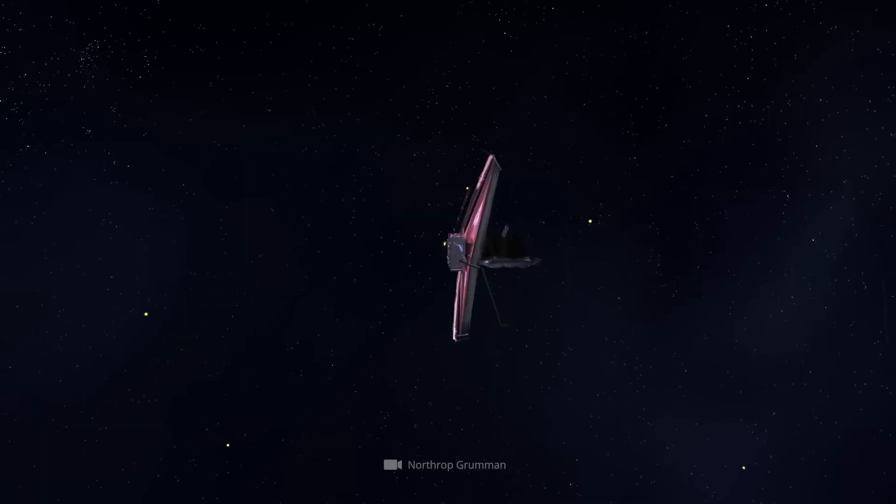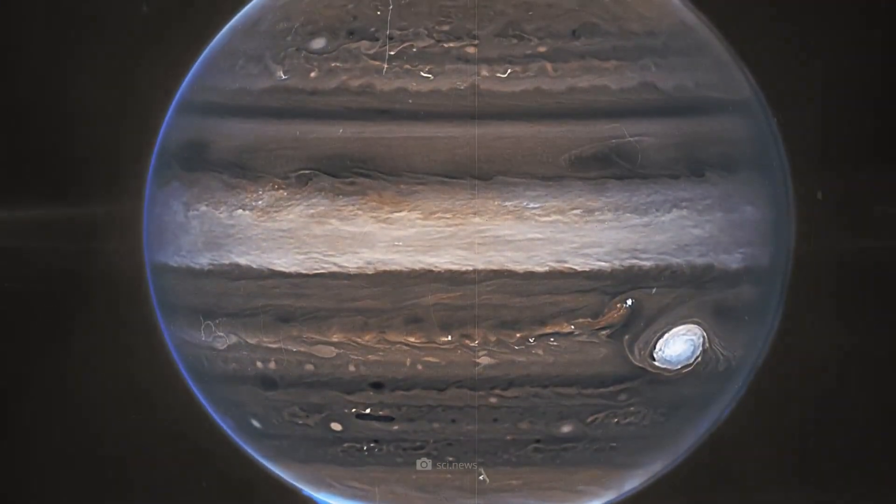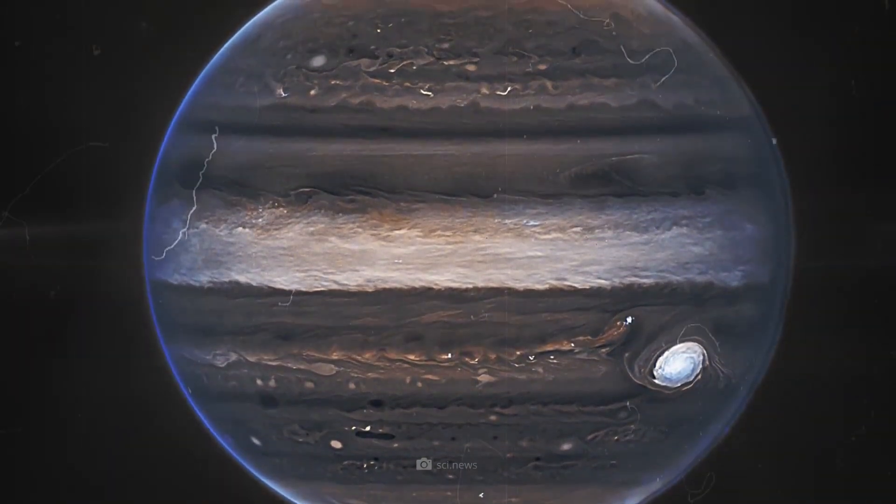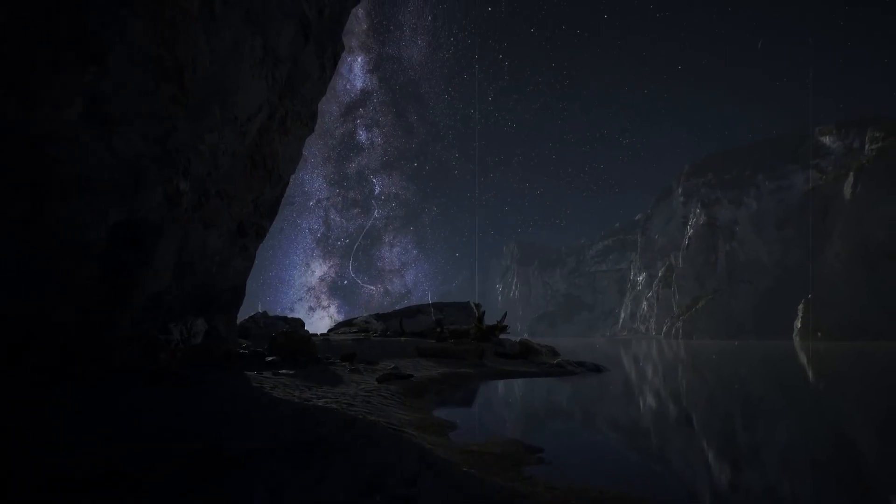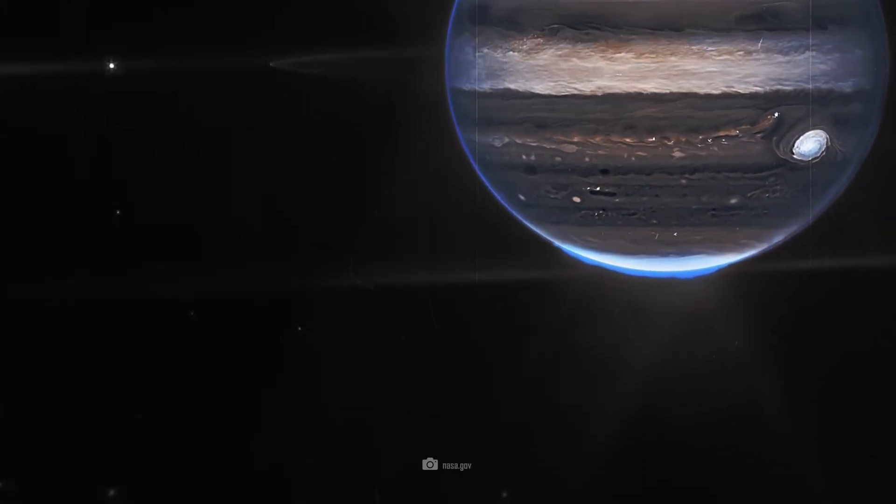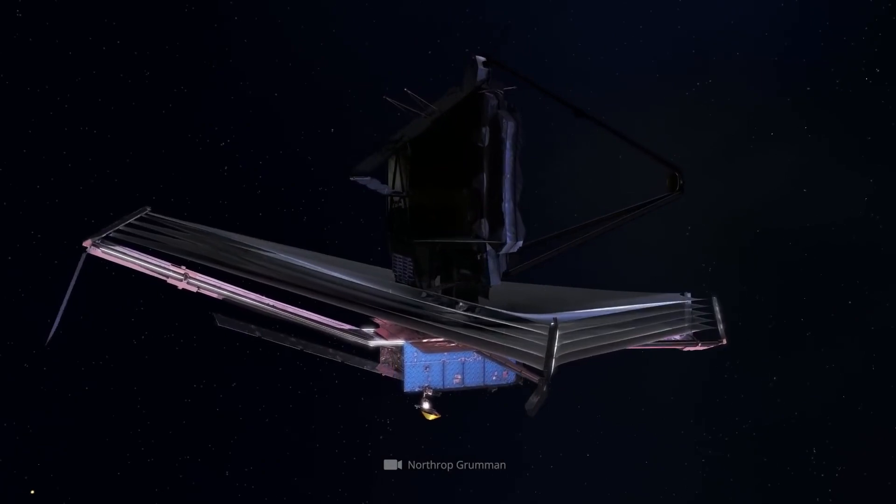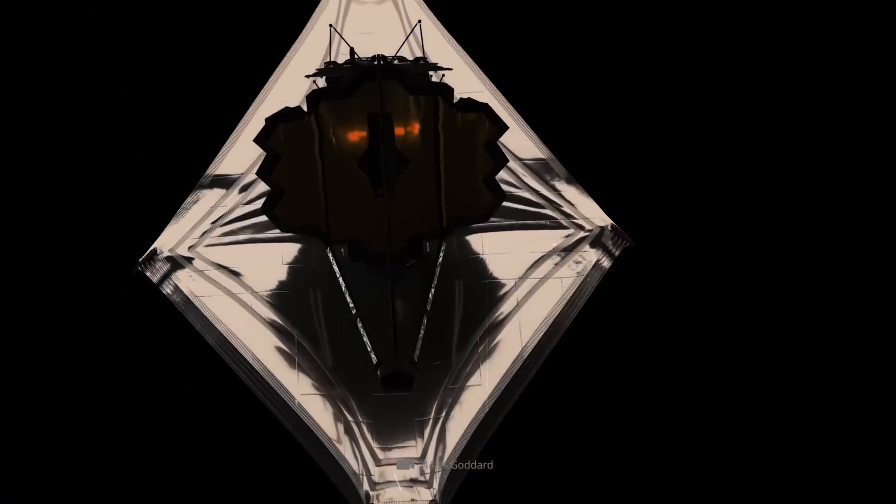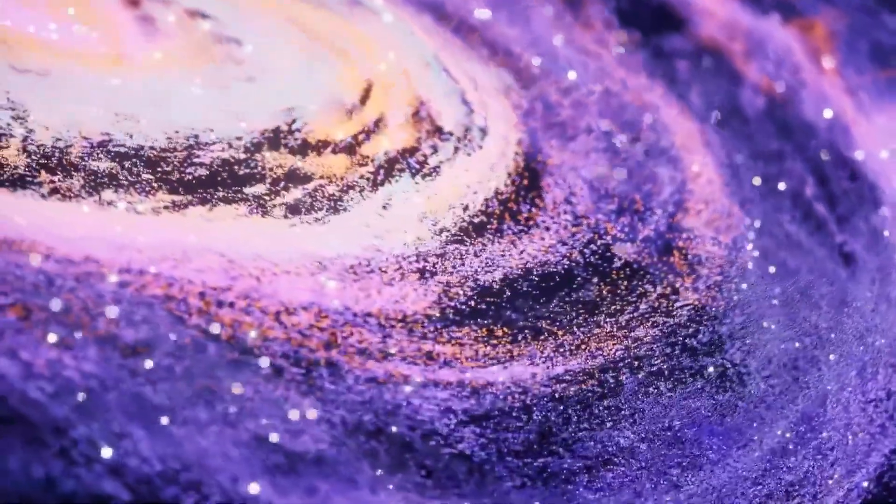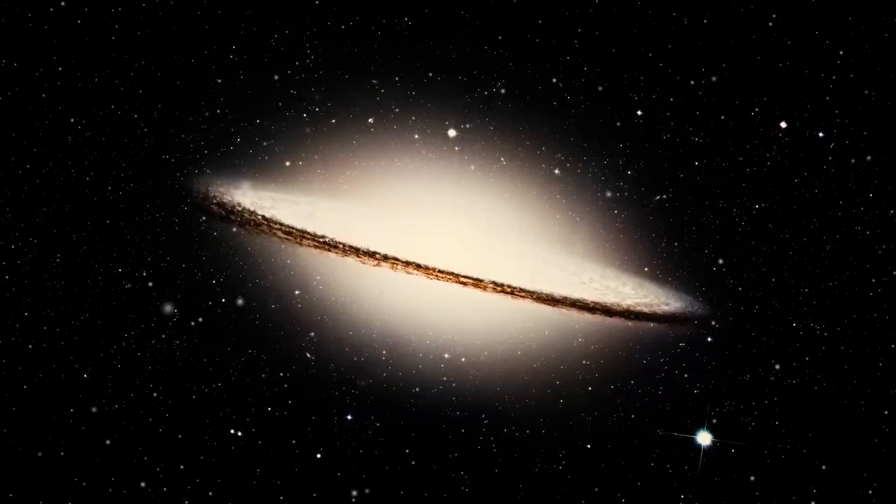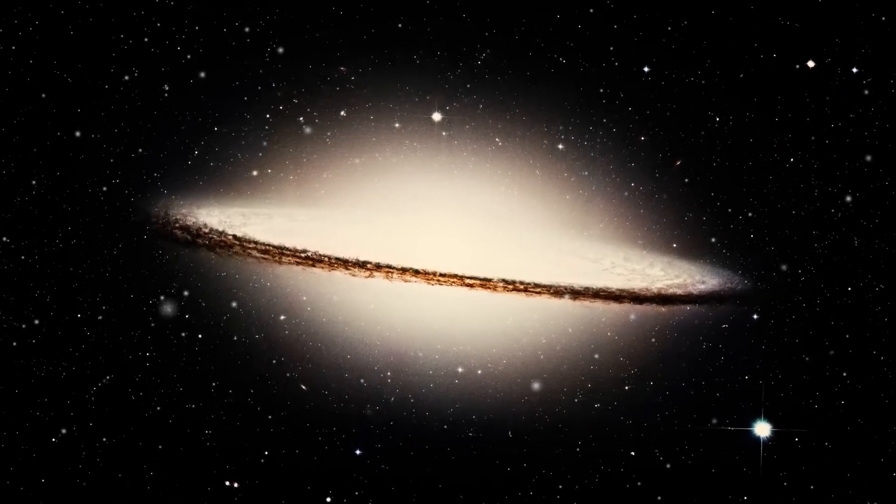Just how novel a view of the familiar can be is demonstrated by fascinating images of Jupiter, which show the king of our planetary system in a light never seen before, literally. The human eye would not be able to perceive the details made visible by Webb. To remove our natural blinders, Webb's NIR cam captured the light reflected by the gas giant using three different filters. In this way, the infrared radiation from different wavelength ranges can be evaluated and displayed separately. Since infrared radiation is not visible, the corresponding wavelength ranges were translated into visible colors.